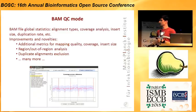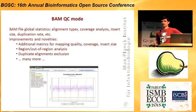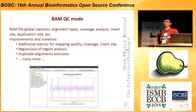Let's start with the improvements in BAM-QC, which is the analysis of BAM files, including alignment type, coverage analysis, and insert size duplication rate. There are many issues improved there, including additional metrics for each parameter, out-of-region analysis, duplicate alignment exclusions, and many more.